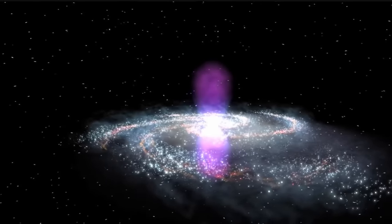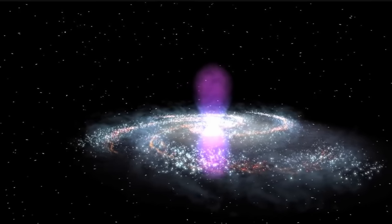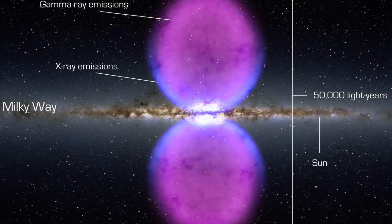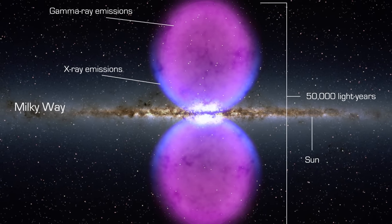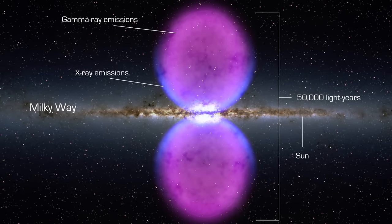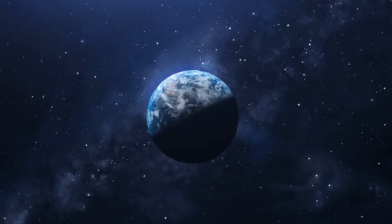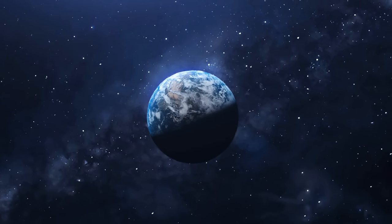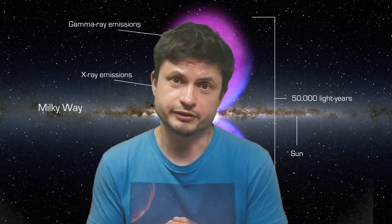Some scientists have even suggested that this might have lasted for a hundred thousand years. Here's roughly what this structure looks like, and as you can see these bubbles are really big, over 25,000 light years in length, suggesting that if they were pointing toward planet Earth, we would right now be inside one of these bubbles.